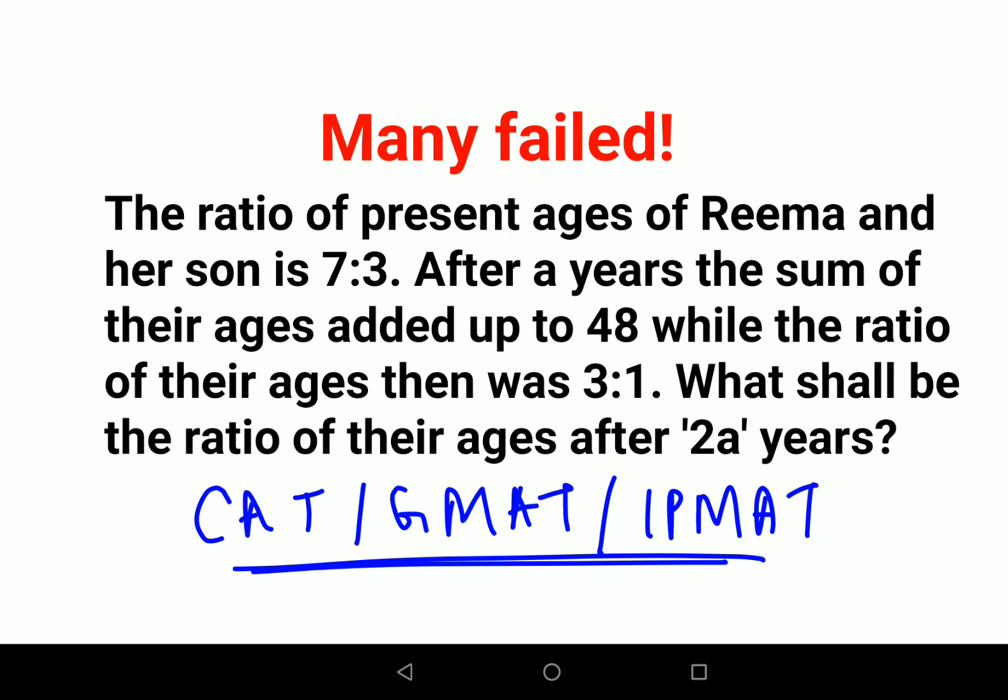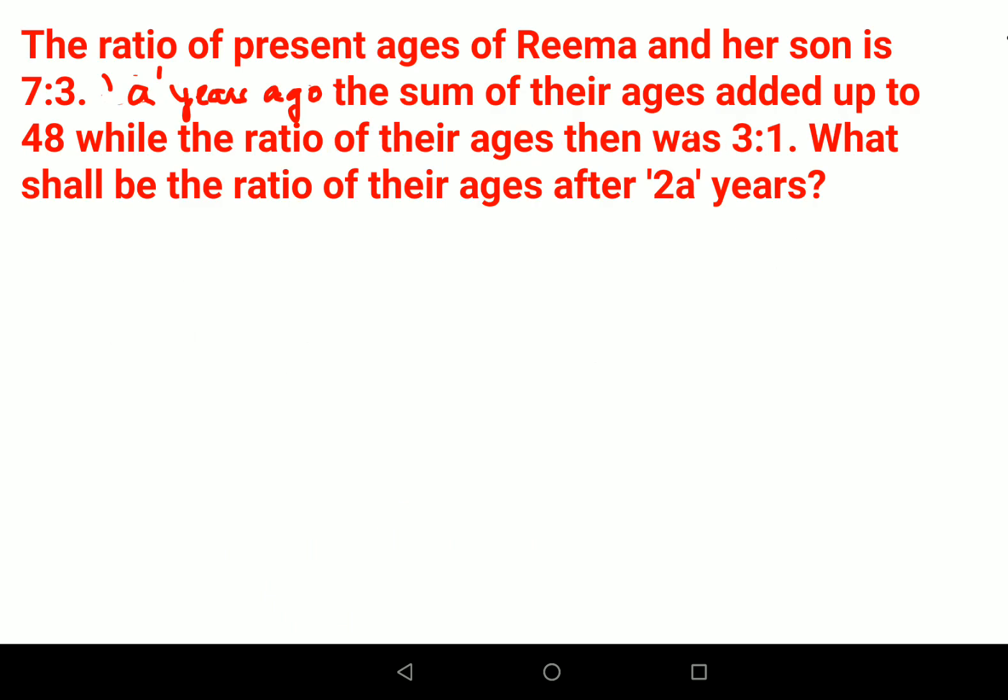Let's understand how do you begin solving this kind of a question. One very important thing to always remember is that whenever you have these kind of questions, you should quickly start noting down the kind of details they have given us. So they have said the ratio of the present ages of Rima and her son is 7 is to 3. So R upon S is given as 7 upon 3.